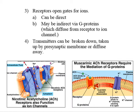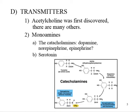Let's take a look at the transmitters. The first transmitter ever discovered was acetylcholine. Since that time, many more transmitters have been discovered, and they continue to discover more and more. We estimate that in the brain there are 30 trillion synapses — I don't know what that number means, but I know it's huge.